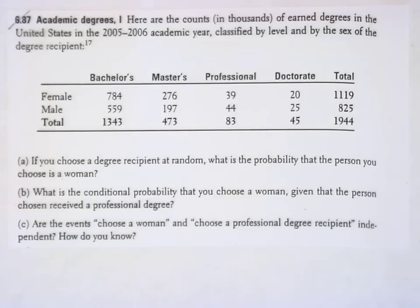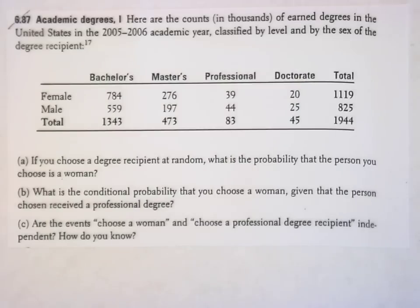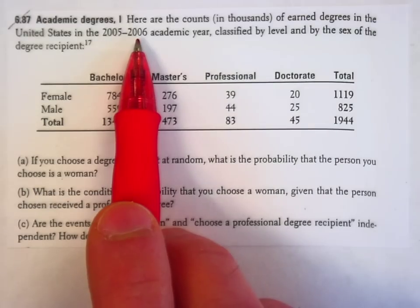Hi there. Here's my solution to question 6.87. So we are looking at a table with counts in it in thousands of degrees earned in the United States during the 05-06 academic year.